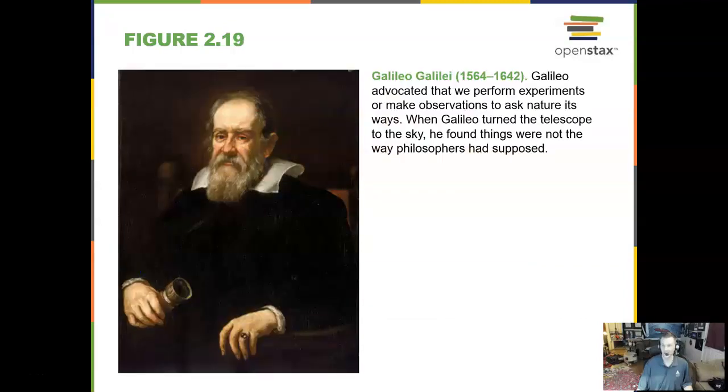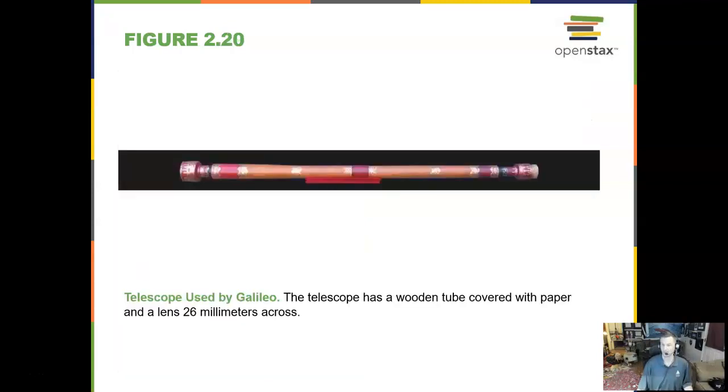Now Galileo Galilei, known by his first name Galileo, came up to do experiments with telescopes and make observations of the sky with a telescope. He was the first one to do it. Now Galileo did not invent the telescope. It was invented by Italian lens makers. But Galileo was able to use it for the first time to look at the night sky. And so here is what his telescope looked like. It was a wooden tube covered with paper and had a lens 26 millimeters across, and that's about an inch.